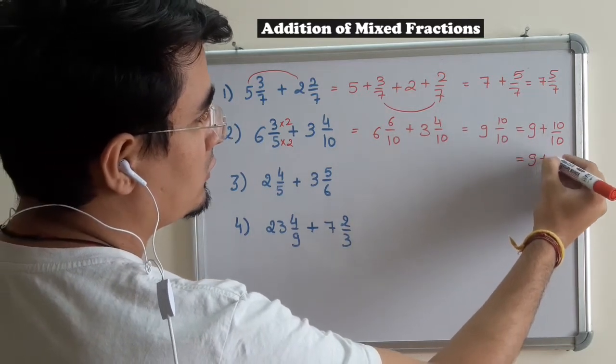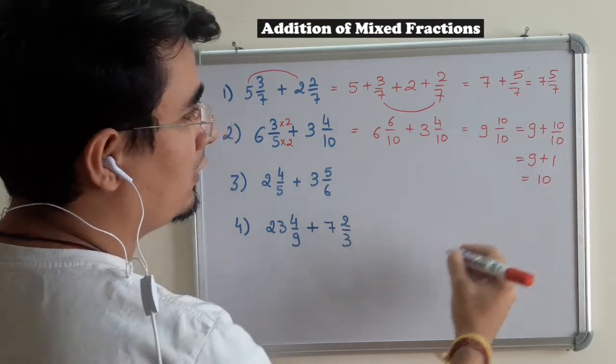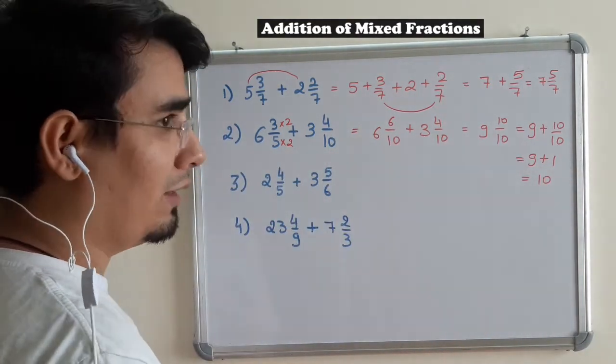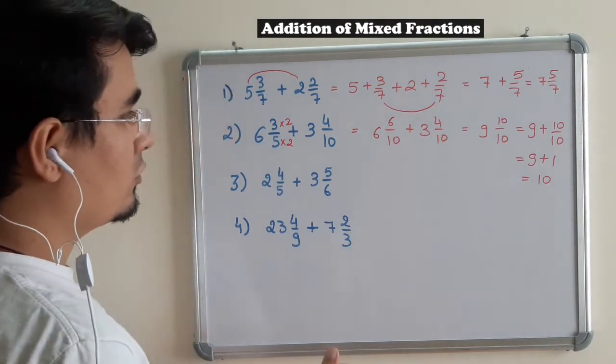And we already know that we can write it as 9 plus 10 by 10. So 9 plus 1, it is 10. So the answer for this particular question is 10. Moving on to the next question.